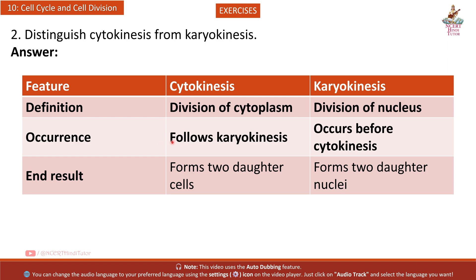Occurrence: Cytokinesis follows karyokinesis; karyokinesis occurs before cytokinesis. End result: Cytokinesis forms two daughter cells; karyokinesis forms two daughter nuclei.